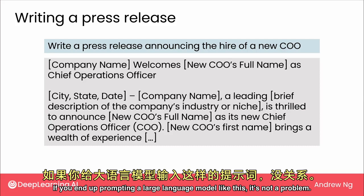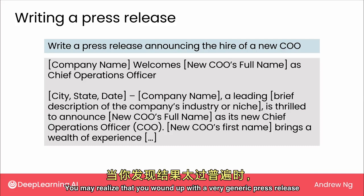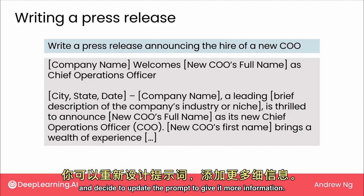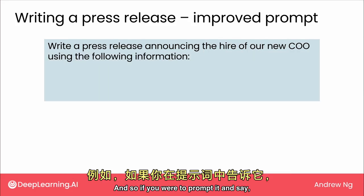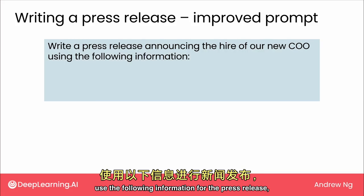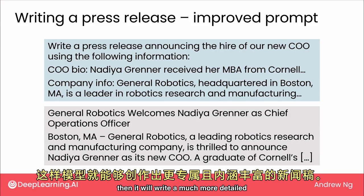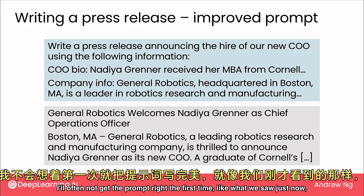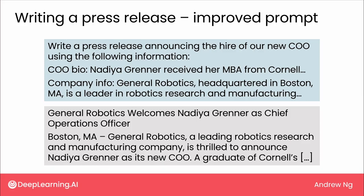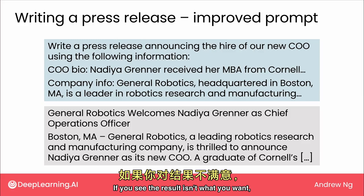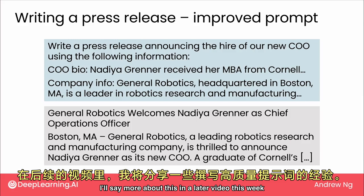If you end up prompting a large language model like this, it's not a problem. You may realize that you wound up with a very generic press release and decide to update the prompt to give it more information. And so if you were to prompt it and say, "use the following information for the press release" — this is a COO bio, this is the name of our company and some details about our company — then it will write a much more detailed and insightful press release specific to the COO's joining this company. I find that when prompting an LLM, I'll often not get the prompt right the first time. And that's totally fine. If you see the result isn't what you want, just revise the prompt and try again. I'll say more about this in a later video this week when we talk about tips for writing effective prompts.